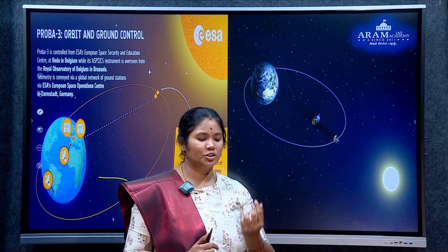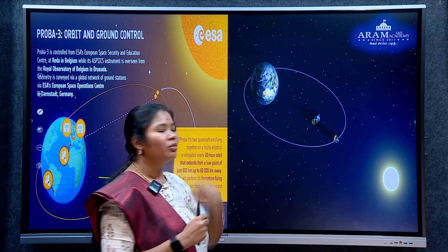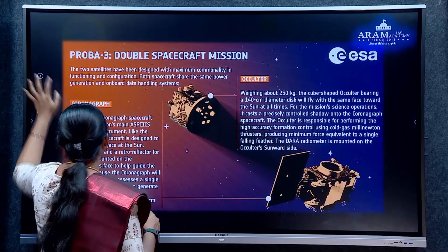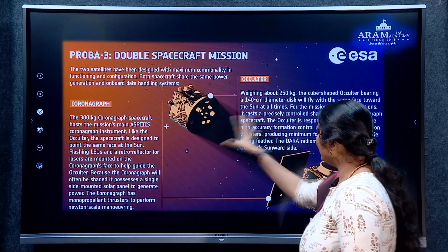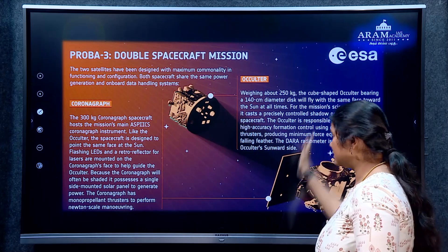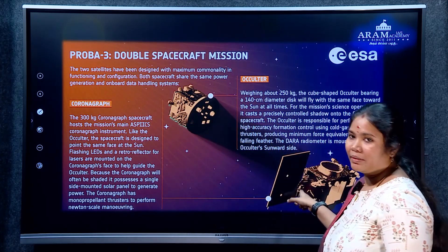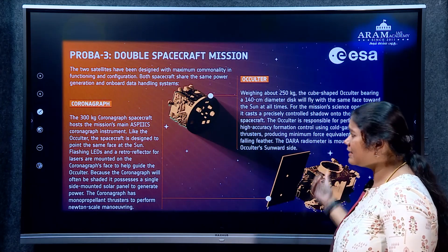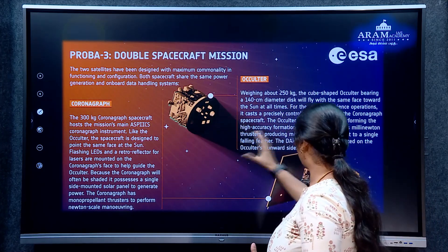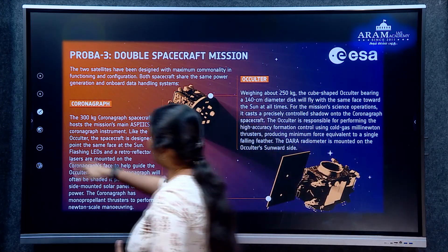The two satellites maintain a precise 150-meter distance. We tell you the distance is maintained to within millimeter accuracy. There are two parts: one is the coronagraph with a camera, and the other is the occulter. The two satellites communicate with each other via a laser beam. The coronagraph observes the corona from behind the occulter, which blocks out the photosphere — like an artificial solar eclipse. The coronagraph is the main science instrument of the Proba 3 mission.